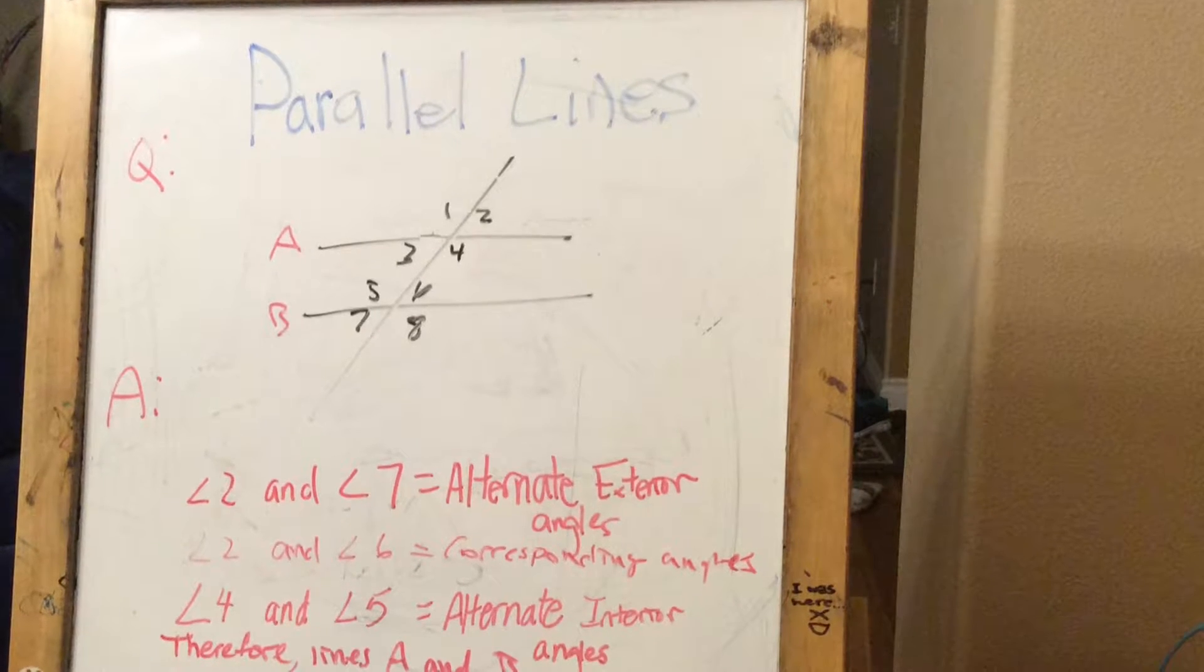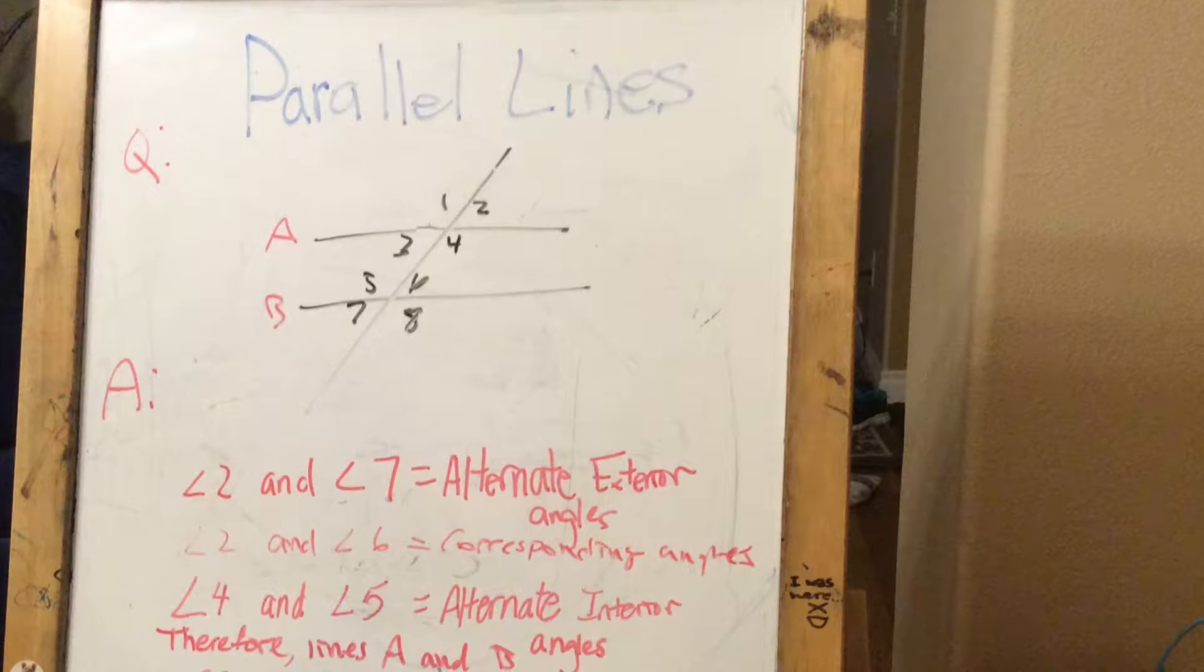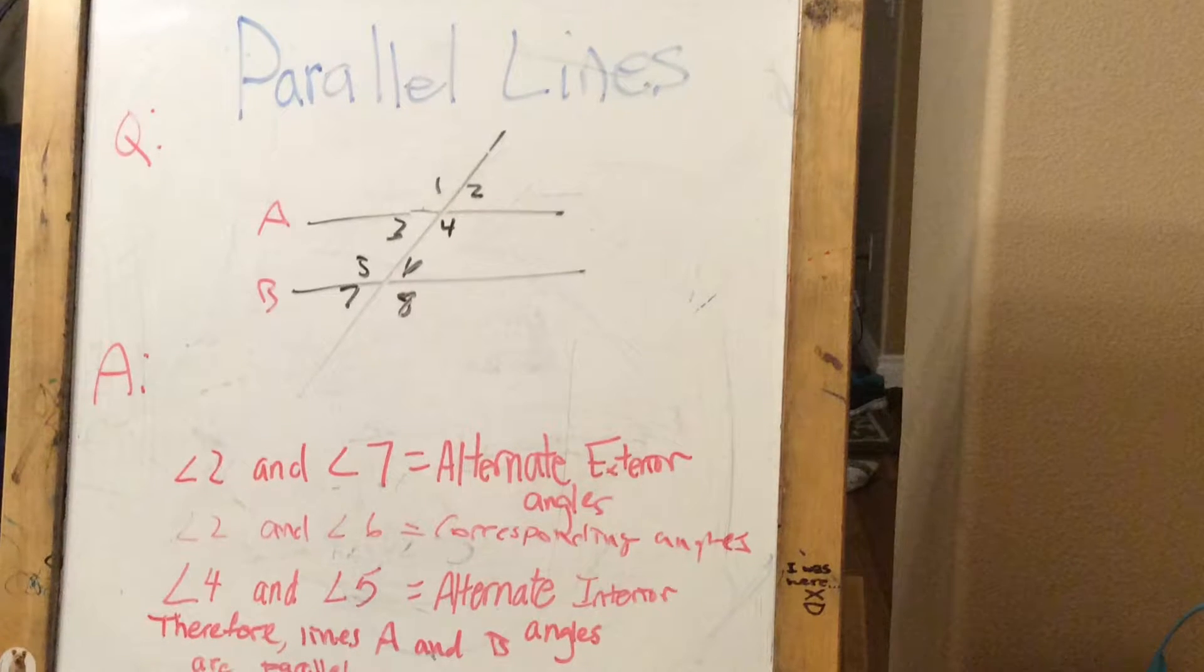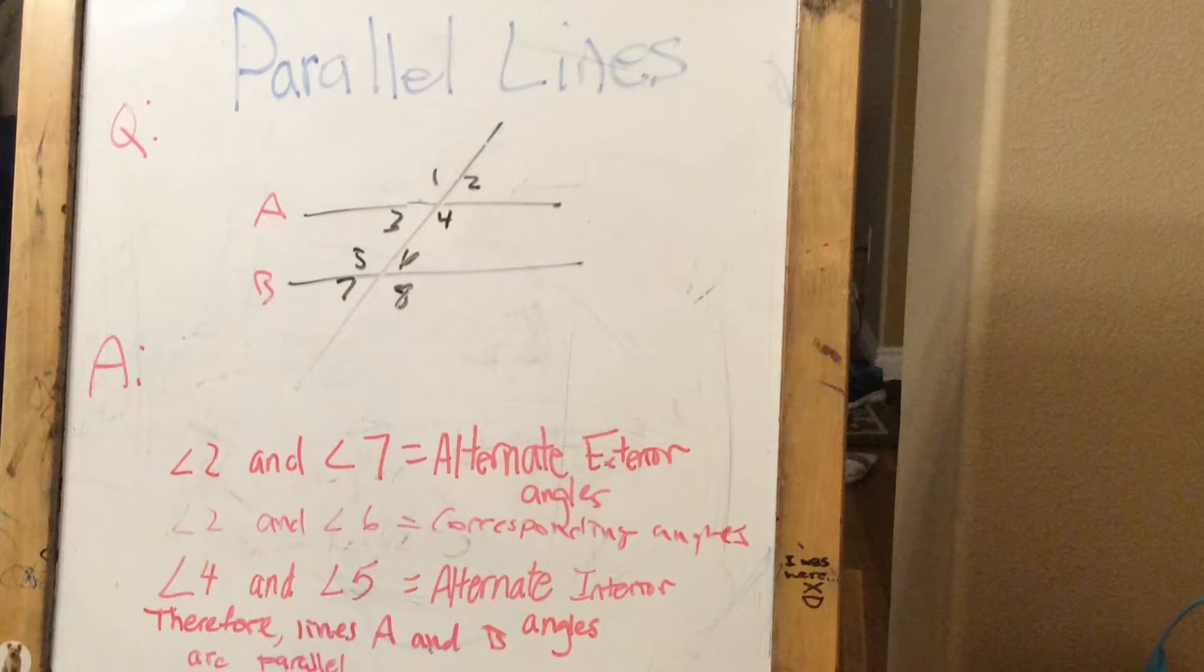One of the reasons that prove when two lines are parallel is alternate exterior angles, another one is corresponding angles, and the third one is alternate interior angles.